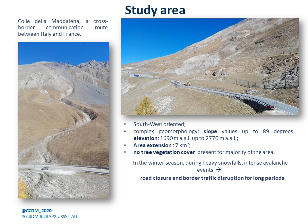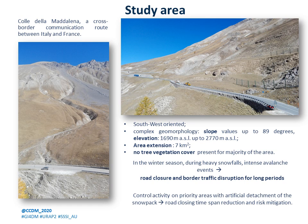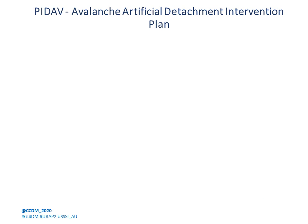At present, in order to maintain the safety conditions of the road, regular closure periods occur quite often and can be very long, with consequent negative effects on socio-economic activities. For this reason, regional administration decided to adopt a control activity on priority areas, together with artificial detachment methods. The artificial detachment of the snowpack at a certain time will in fact reduce the road closing time span and minimize the risk related to people and road safety. Regional administrations have activated the avalanche artificial detachment intervention plan in order to prevent and manage the avalanche risk in the study area.